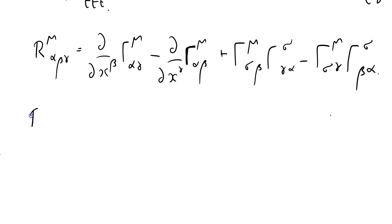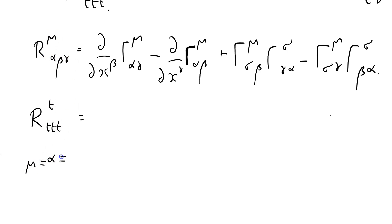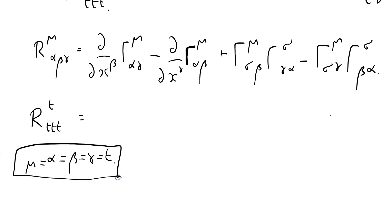So what does that tell us? That tells us that R_TTTT - the one I want to evaluate - is equal to... when I'm doing this, mu equals alpha equals beta equals gamma equals the time coordinate. So I can just make a whole bunch of substitutions: d/dT of Christoffel(T,T,T) minus d/dT of Christoffel(T,T,T).